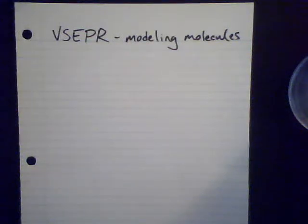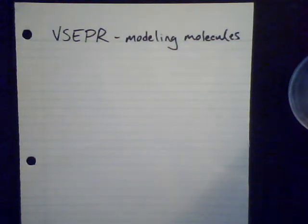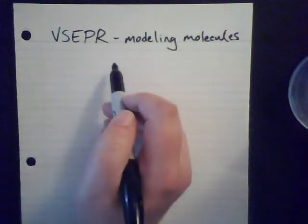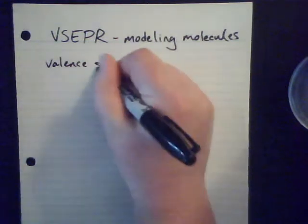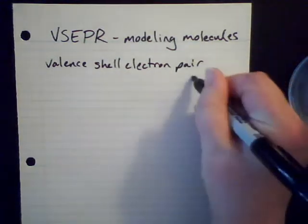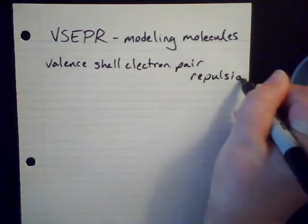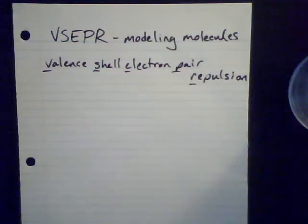Today I want to talk about modeling molecules. We've talked about ways to model molecules in two-dimensional space, on a piece of paper, and we talked about the Lewis dot model. I want to talk about how we can go from that two-dimensional Lewis dot model to a three-dimensional representation of a molecule, and to do that we use a model called VSEPR — it stands for valence shell electron pair repulsion.